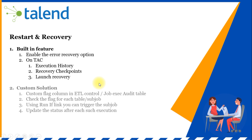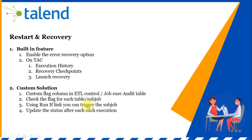The second option for enabling restartability is based on a custom solution. You can have a custom flag column in your ETL control table or job execution audit table. You can use a status column or any additional flag column, and based on that flag you can trigger the subsequent sub-jobs. You can achieve this using 'Run If' links in your jobs, which will check the status of a particular sub-job and then trigger it. At the end, if successful you update the status; otherwise you update it as a failure, so that when you restart the workflow it restarts only the jobs that have failed.